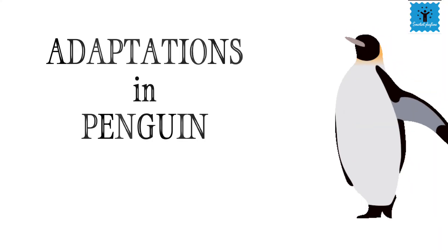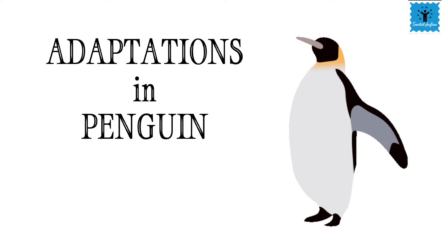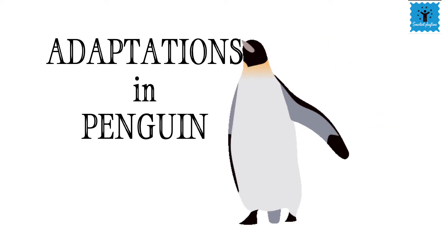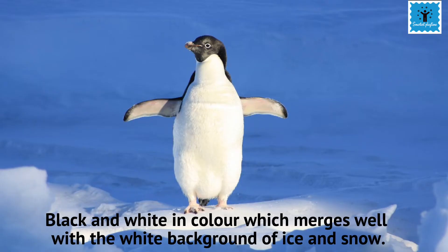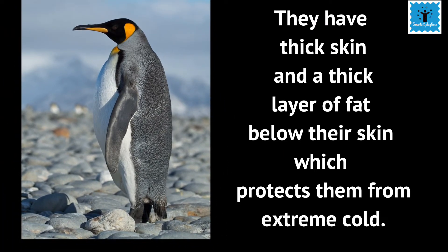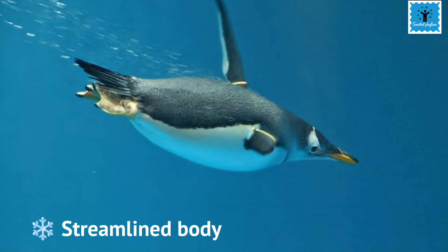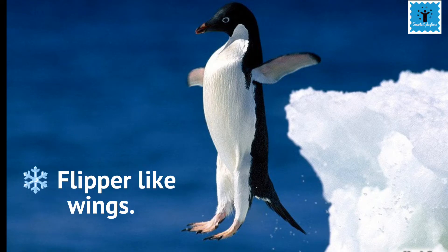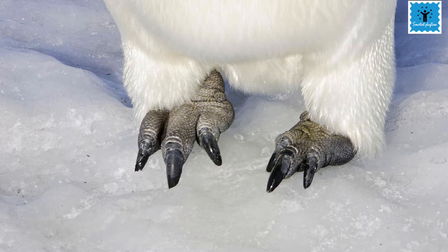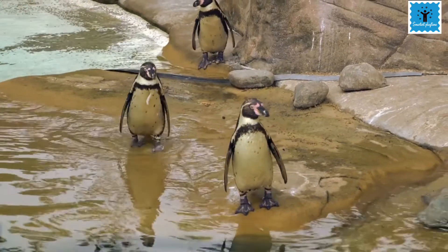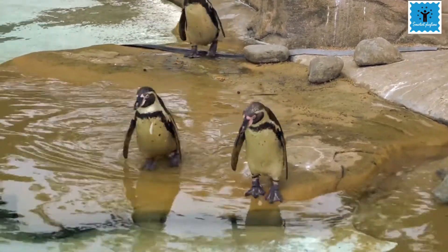Another well-known animal living in the polar region is the penguin. Penguins are black and white in color, which merges well with the white background of snow. Their skin is thick and has a thick layer of fat below it, which protects them from extreme cold. Their body is streamlined and their wings are flipper-like. They have webbed feet which makes them very good swimmers. These adaptations also help penguins to catch their prey, which is fish.